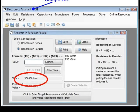When I need to calculate values of resistors and pots, I use a freeware Windows program called Electronics Assistant.